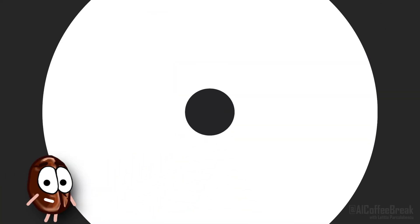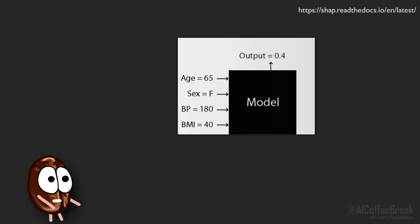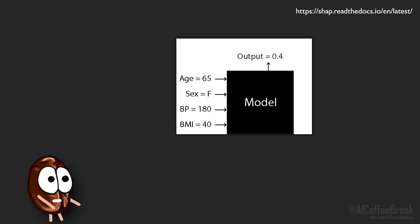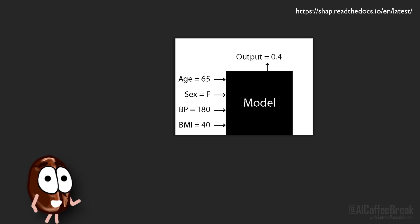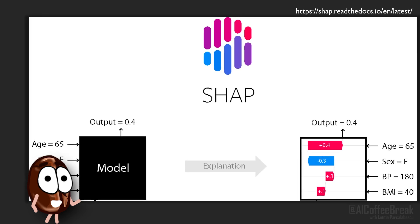Now back to the video. Imagine you have a model that takes some inputs such as values for the age, the sex, the body mass index, and predicts the probability of diabetes. You want to know how much each of these inputs contributes to the model's prediction. Shapley values can tell you exactly how much each input contributes to the model's prediction of, let's say, a 40% probability of diabetes.